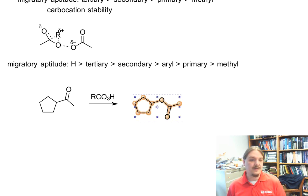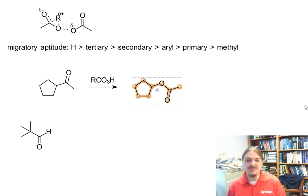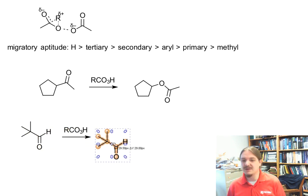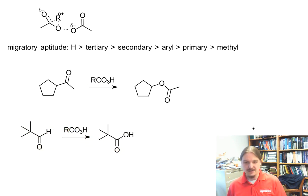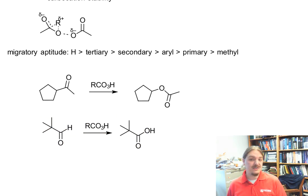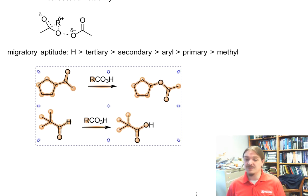If we have an aldehyde, the hydrogen wins because this simply oxidizes the aldehyde to a carboxylic acid, which is relatively easy, and hydrogen has low mass making it easy to migrate. This gives you a general idea of how to predict outcomes and how you can use the Baeyer-Villiger oxidation to synthesize specific esters from specific ketones.